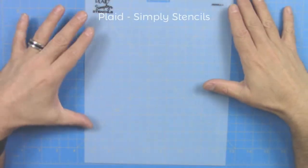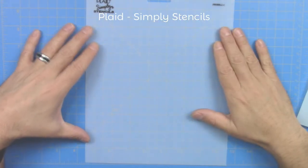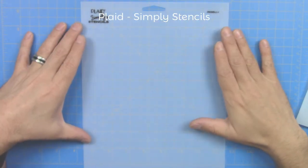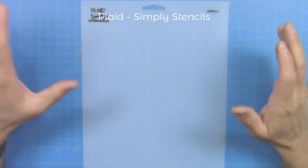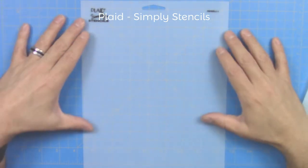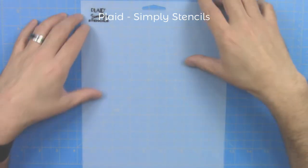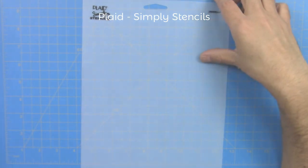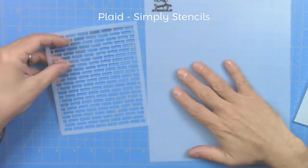Now the Plaid simply stencils come in packs of three sheets of 8 by 10 inches. They are smaller size than the U-Create brand. So keep in mind that you will have to cut smaller designs on this sheet of stencil.